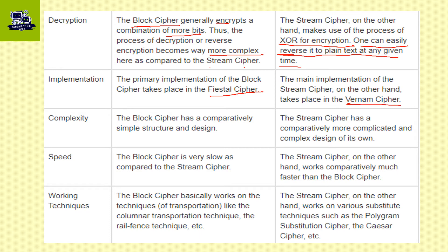Complexity: block cipher has a comparatively simple structure and design. Stream cipher, on the other hand, is more complicated and has a more complex design.